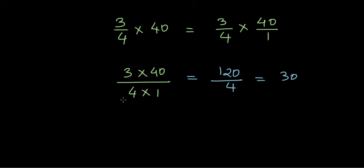Or I could simply divide 40 by 4. 40 is 4 times 10, so I am remaining with 10 in the numerator and in the denominator, I have 1. So I can also write this as 3 times 10 by 1, which is nothing but 30.